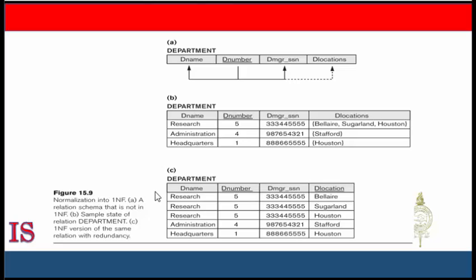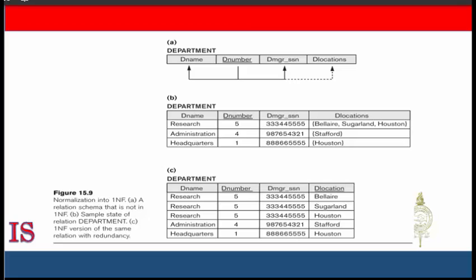Another option, shown in option C/D, is to expand the key — D_Number and D_Location now make up the key, allowing a separate tuple in the original department relation for each location of the department. The disadvantage to this solution is the redundancy that it causes, as you can see in the figure.